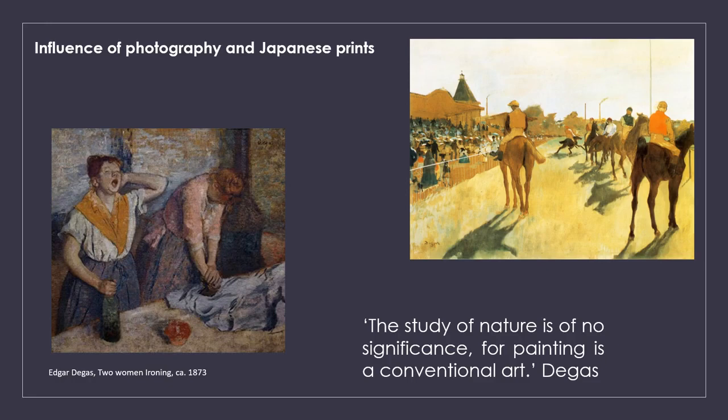Degas was influenced by photography and by prints, and this can be seen in how he crops the edges of his compositions to create a sense of spontaneity — as if the painting is a snapshot of the scene, like photography. This spontaneity stems from his innovative viewpoints, enhanced by his close interest in photography and his exceptional drawing skills learned in college.